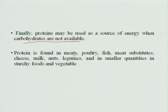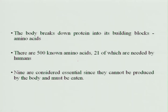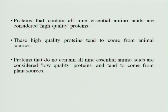Protein is found in meats, poultry, fish, meat substitutes, cheese, milk, nuts, and legumes, and in very small quantities in starchy foods and vegetables — which is why they are not the main source of proteins. The body breaks down proteins into their building blocks, the amino acids. There are about 500 known amino acids, 21 of which are essential for the body, and 9 are considered essential because they are not produced in the body and must be supplied through food. Proteins containing all 9 essential amino acids are high-quality proteins and tend to come from animal sources.